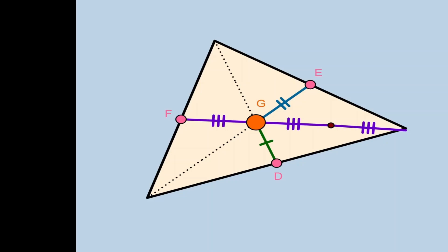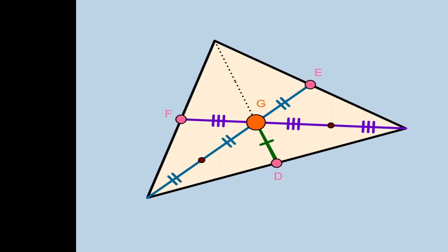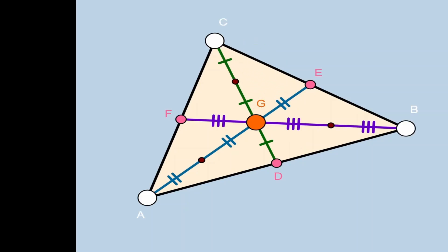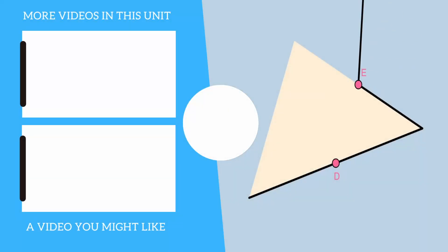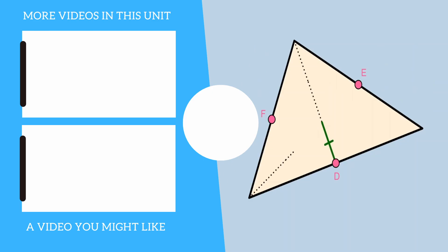The same goes with the blue line GE: the distance from the centroid to the vertex is twice GE. And with the green line, two distances from D to the centroid equal the distance from the centroid to the vertex. If you'd like to continue learning about mathematics, you can check out the videos on the left.